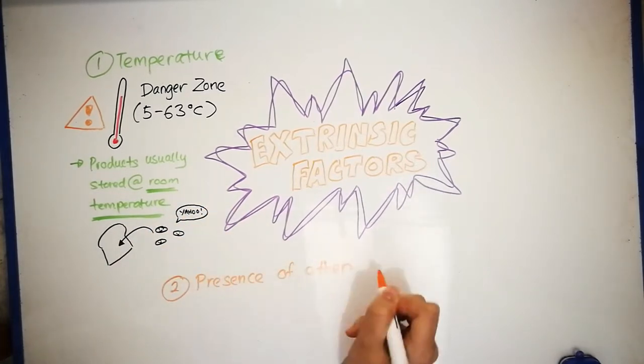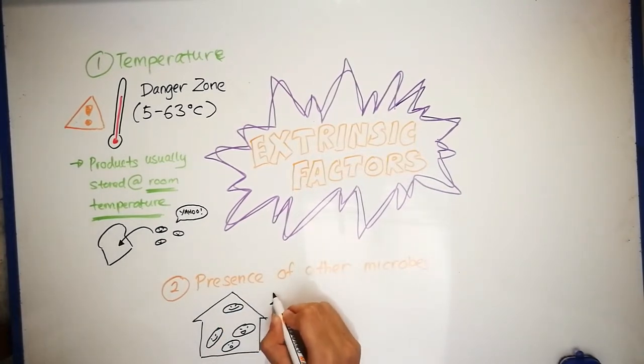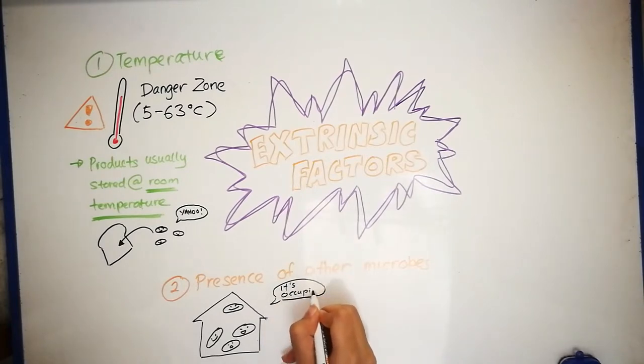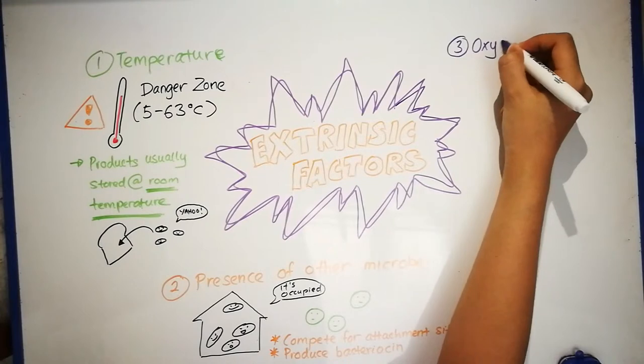The presence of other microbes is also a factor. This is because other microbes will compete for nutrients and attachment sites with spoilage microbes, and produce bacteriocins to kill or inhibit the growth of spoilage microbes.